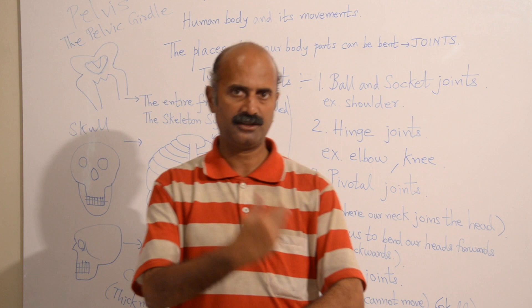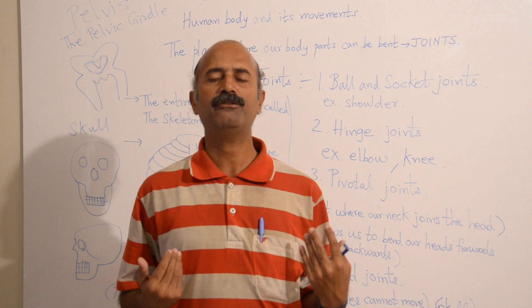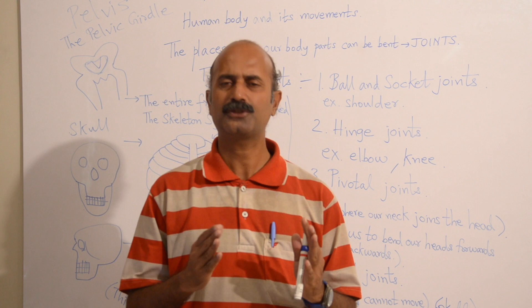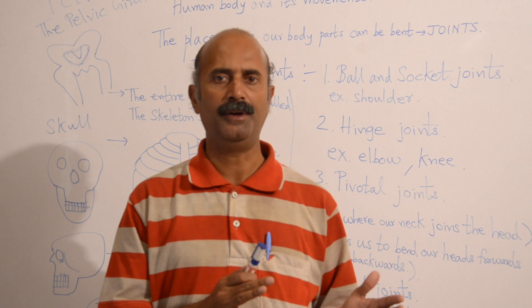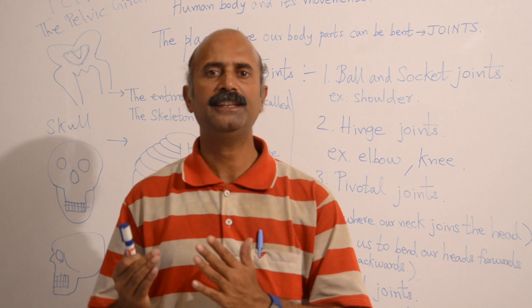We all have 206 bones and approximately close to 600 muscles in our body. Body movement occurs due to the bone and muscle movement. The muscles contract and expand, which allows the bones to move. In this way, movement occurs.